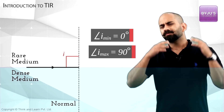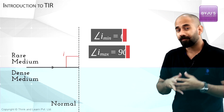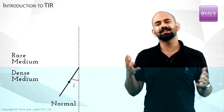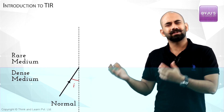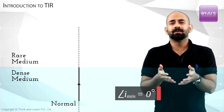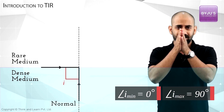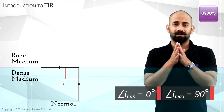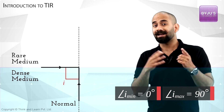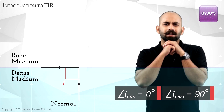Now think about the other case — light coming from a dense medium to a rare medium. You would say the angle of incidence should have a minimum of 0 degrees and a maximum of 90 degrees. So I can have a ray incident along the normal, and I have another ray having an angle of 90 degrees, basically coming along the surface.